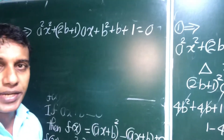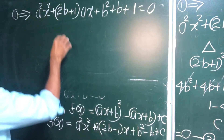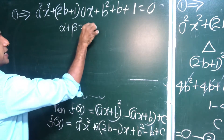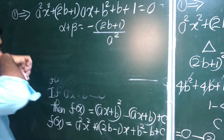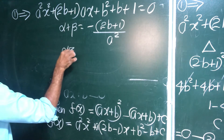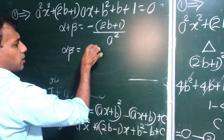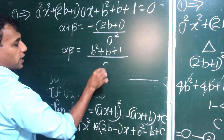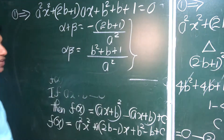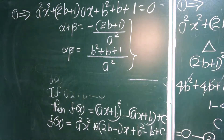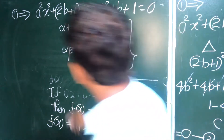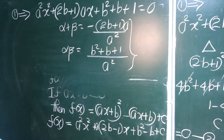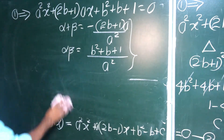For roots alpha and beta of the first equation: alpha plus beta equals minus(2b+1)·a over a squared, which simplifies. Alpha times beta equals (b squared + b + 1) over a squared. Now for the second equation with c = 1: a squared x squared plus (2b−1)·a·x plus b squared minus b plus 1 equals zero, with roots gamma and delta.